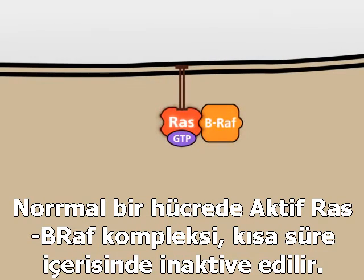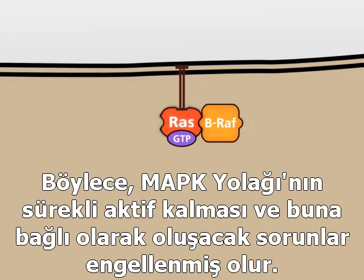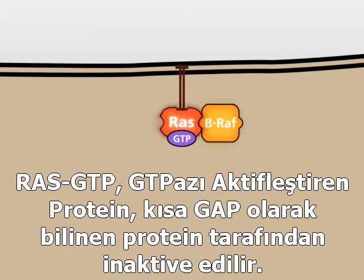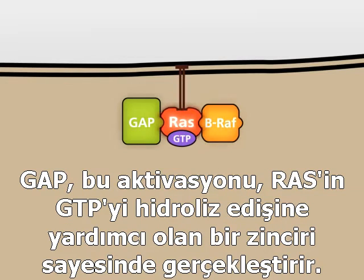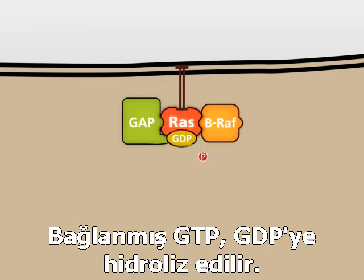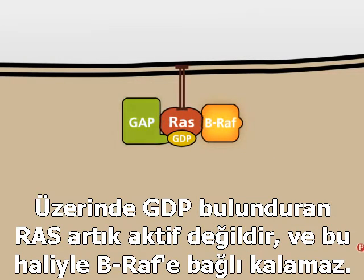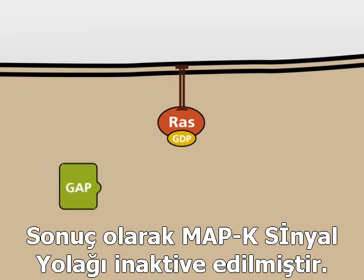In the normal cell, the active RAS-GTP complex is inactivated shortly after its activation. In this way, a permanently active MAP kinase signaling pathway and undesirable effects are avoided. RAS-GTP is inactivated by the GTPase activating protein, also known as GAP. GAP binds to RAS-GTP and increases the very weak GTPase activity of RAS by several orders of magnitude, by providing a domain that assists the RAS protein in the hydrolysis of GTP. The bound GTP is hydrolyzed to GDP. GDP-bound RAS is no longer active and can no longer bind to BRAF. As a result, the MAPK signaling pathway is turned off.